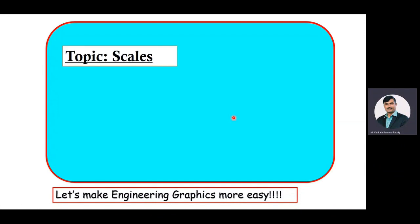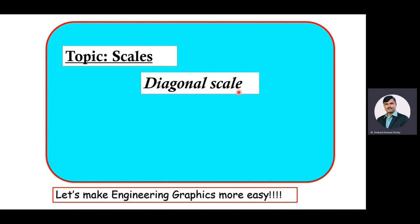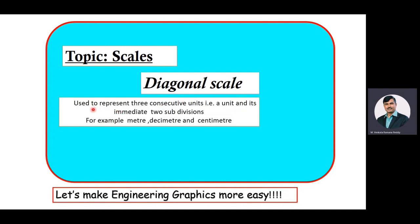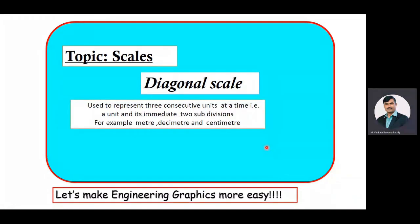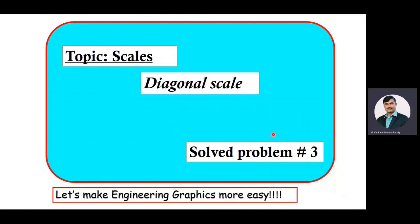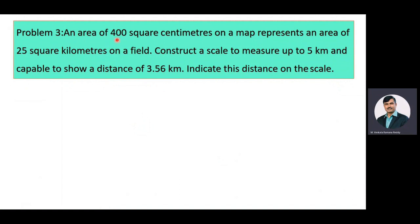We are into the discussion on the topic of scales. Under scales, we are going to construct a diagonal scale. The diagonal scale is used to represent three consecutive units — a unit and its immediate two subdivisions, for example meter, decimeter, and centimeter. This is the third solved problem under diagonal scale. The given problem: an area of 400 square centimeters on a map represents an area of 25 square kilometers on a field. Construct a scale to measure up to 5 kilometers and capable to show a distance of 3.56 kilometers. Indicate this distance on the scale.